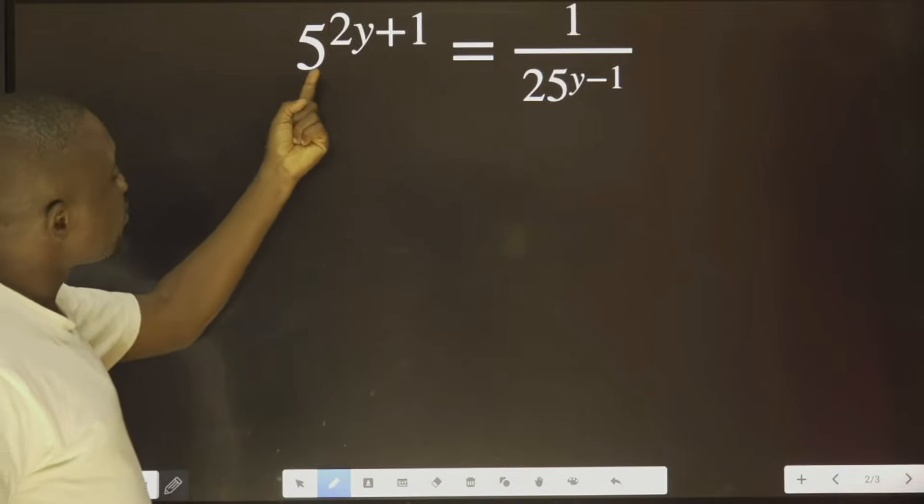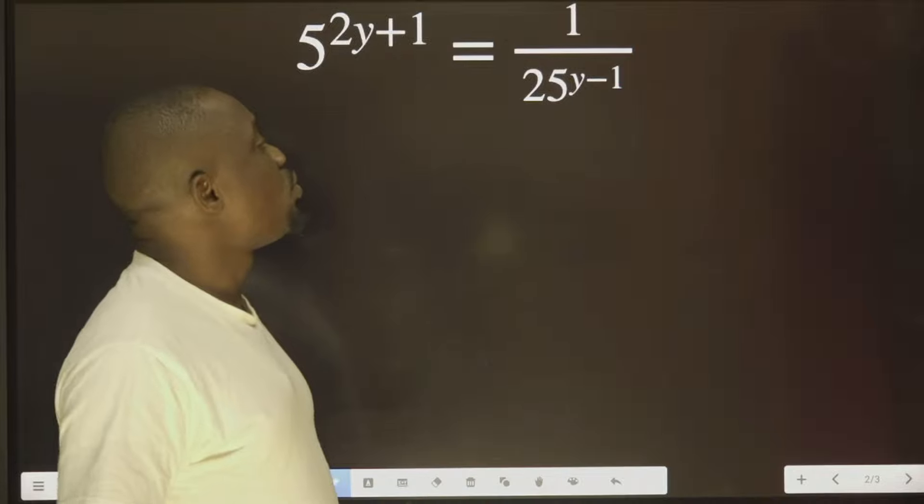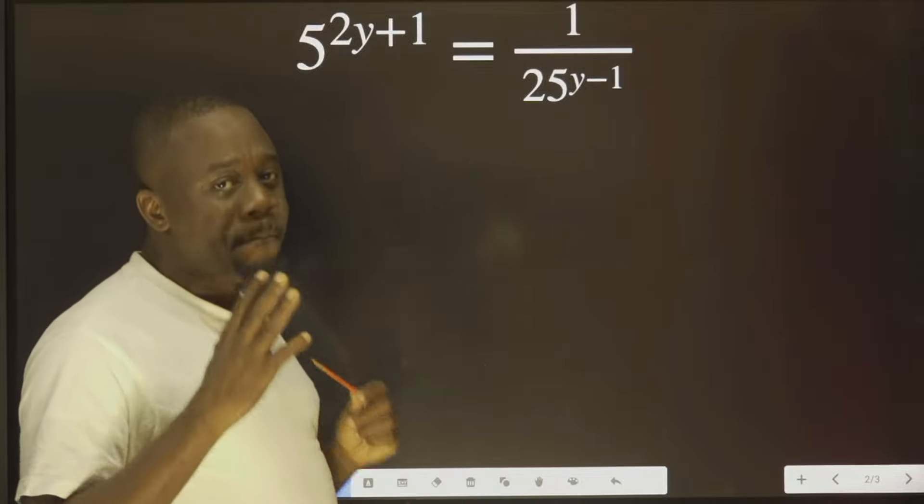It says 5 raised to power 2y plus 1 equals to 1 over 25 raised to power y minus 1.